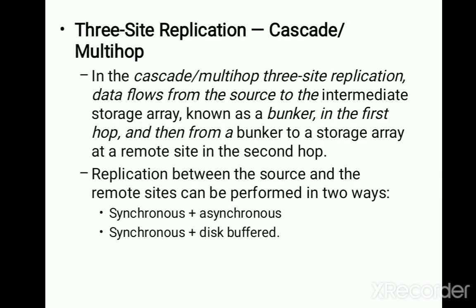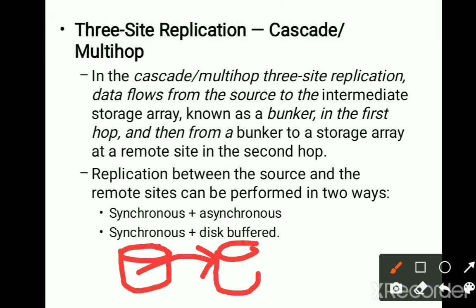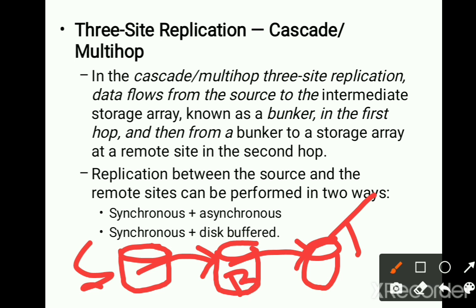In three-site replication, first we'll discuss cascade or multi-hop. In this configuration, data flows from the source to an intermediate storage array — also known as a bunker — and from the bunker it moves to the remote site. Diagrammatically, the source is copied to the bunker, and from the bunker it is copied to the target or remote site.